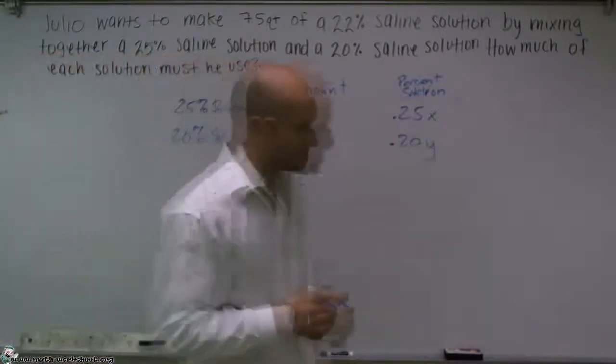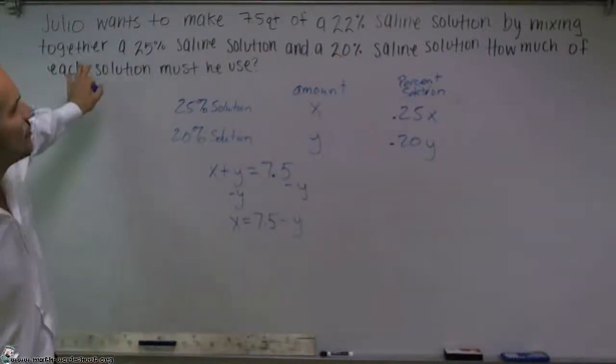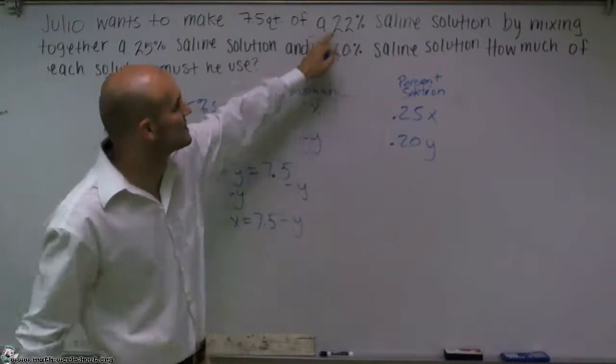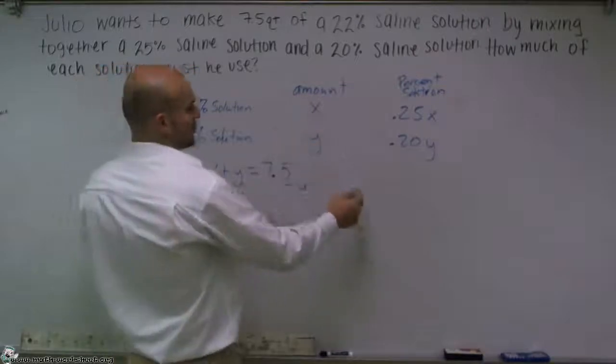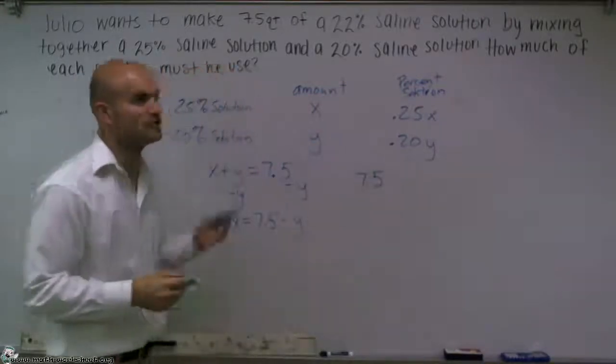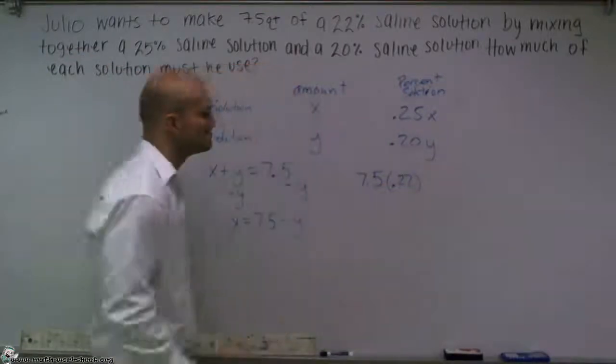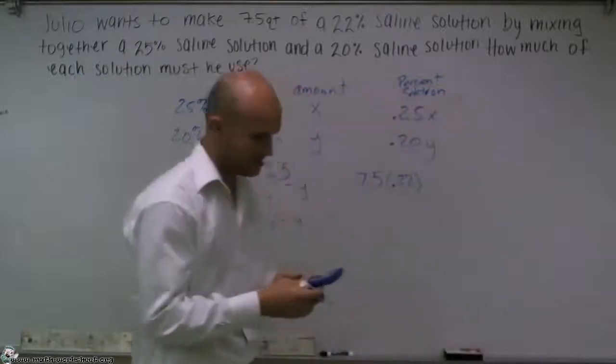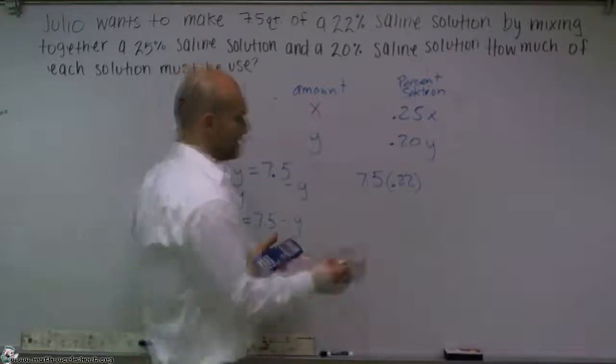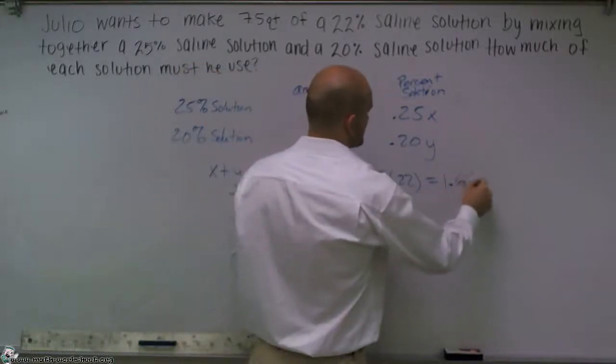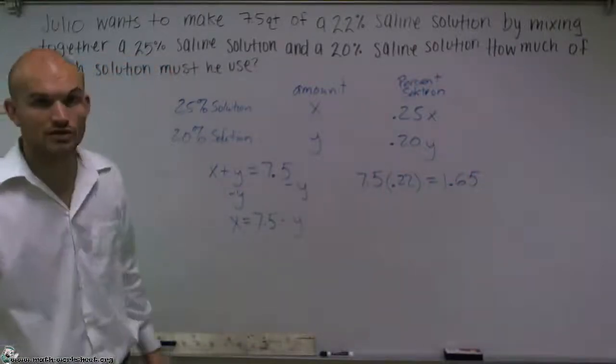Now, what I'm going to do is I need to understand, well, what is the solution he wants? Well, he wants a 22% solution out of that 7.5 quarts. So I can take my 7.5 quarts, and I want a 22% solution of that. So I'm going to multiply 7.5 times 0.22. And when doing that, I get 7.5 times 0.22 is going to equal 1.65 is going to be the percent of my saline solution, of the total.